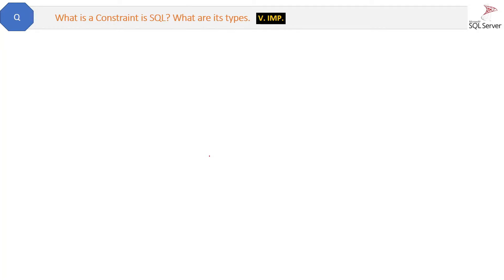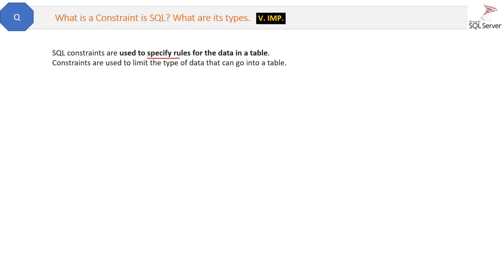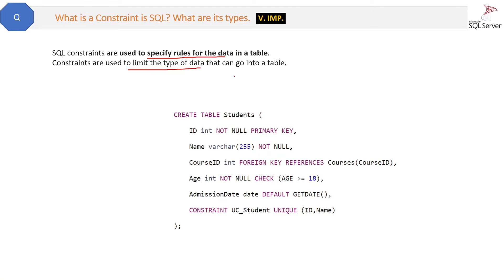What is a constraint in SQL and what are its types? It is a very important concept in SQL Server. In simple English, SQL constraints are used to specify rules for the data in a table. Constraints are used to limit the type of data that can go into a table. Here we are creating a student table and applying all the types of constraints in it — constraint is applied on the data to control what kind of data will be there.